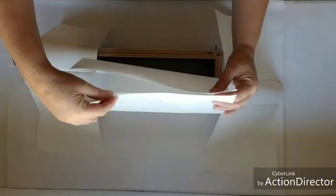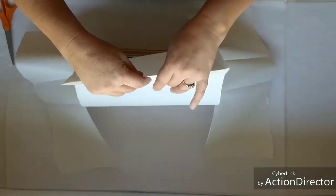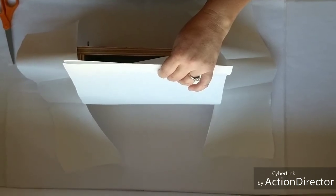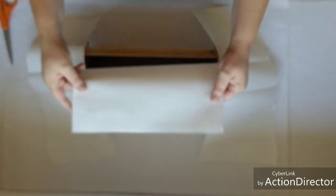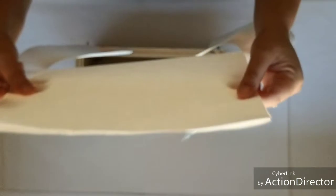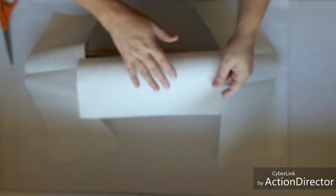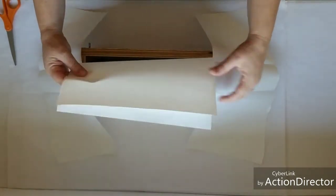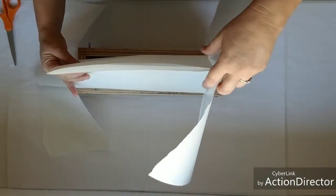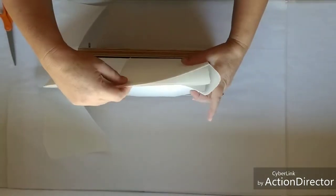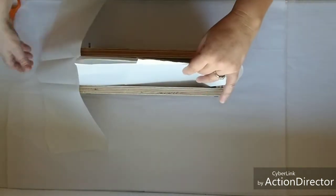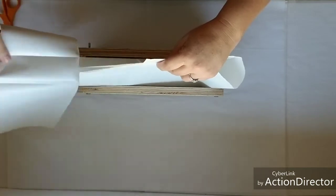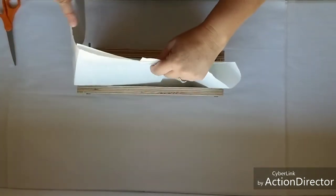You're going to go ahead and grab the two long sides, put those together and fit your other side in there. Then you're just going to fit that inside your mold and then you'll do the same with the other side.